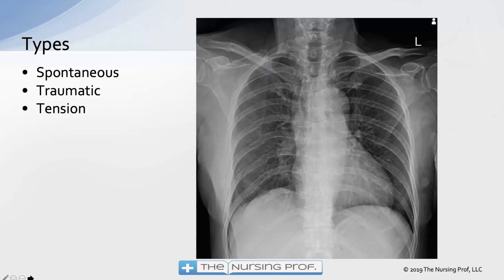There are different types of pneumothorax: spontaneous, traumatic, and tension. The spontaneous pneumothorax occurs with no trauma involved — a little bleb on the lung pops. This frequently happens in young adults. Spontaneous pneumothoraces often reoccur because there are these little out-pouches or blebs on the lung that pop.